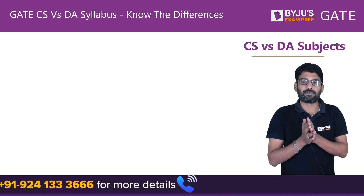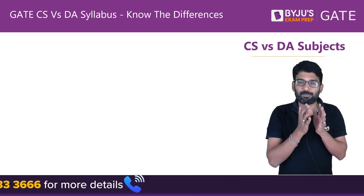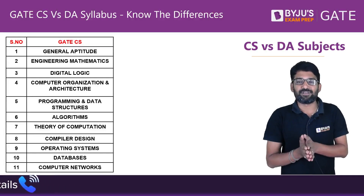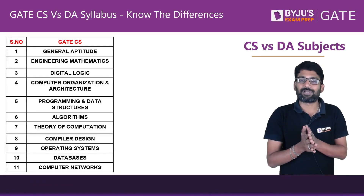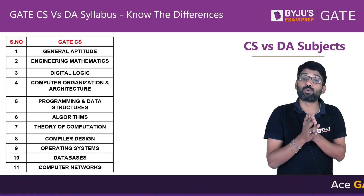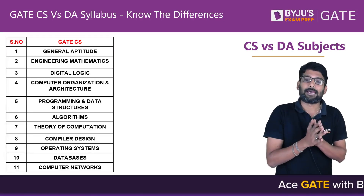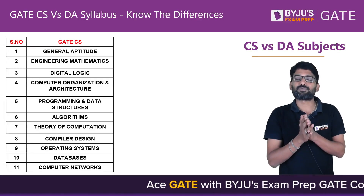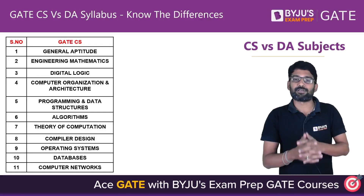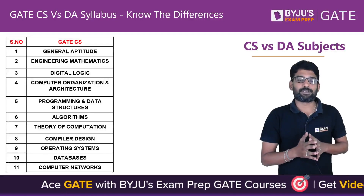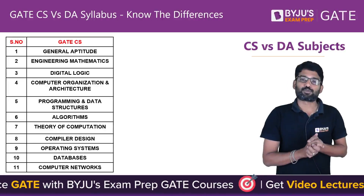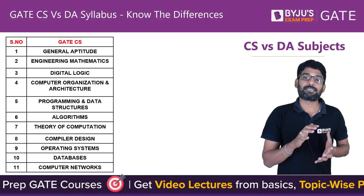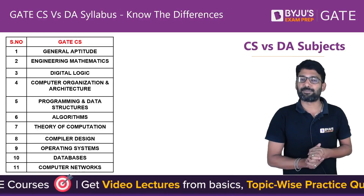If you look at the subjects in Computer Science, we have: Aptitude, Engineering Maths, Digital Logic, COA, Programming and Data Structures through C language, Algorithms, Theory of Computation, Compiler Design, Operating Systems, Databases, and Computer Networks — so around 11 subjects total in CS and Information Technology.